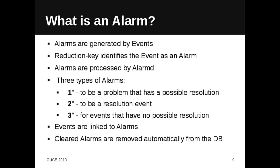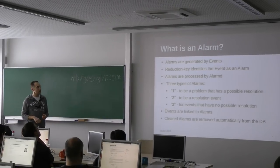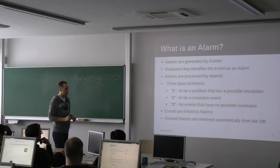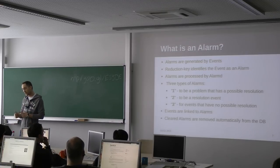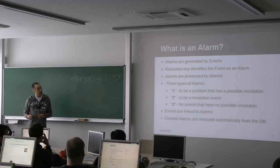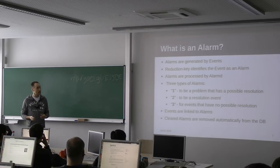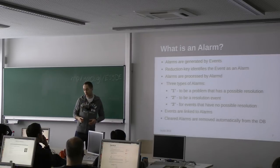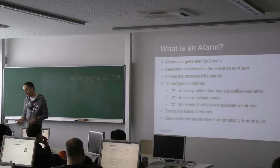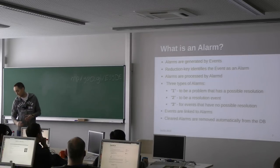What is an alarm? Alarms are generated by events, and the reduction key identifies the event as an alarm. Alarms are processed by alarmD. We have three types of alarms: problem alarms that have a possible resolution, then the resolution event or alarm, and a third type — alarms that have no possible resolution. Events are linked to alarms; when you click on the counter in the alarm view, you get all events belonging to a specific alarm. Cleared alarms are removed automatically from the database.